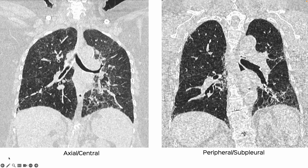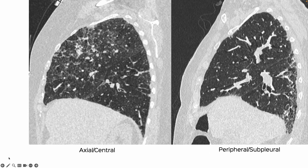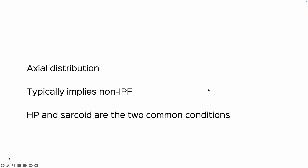This is the fundamental difference between axial or central distribution and peripheral subpleural distribution. The coronal views don't show it really well, though the axial distribution is visible. The sagittal images are brilliant — you can see the axial distribution spanning the anterior-posterior width of the upper lobe, whereas the peripheral subpleural pattern is clearly seen on the other side. Having axial, coronal, and sagittal views together makes it much easier to appreciate.